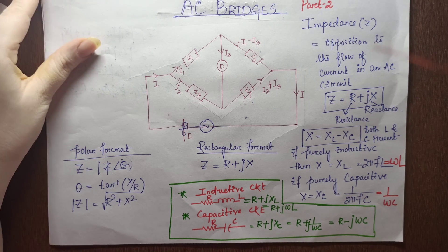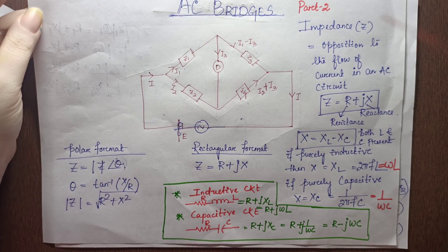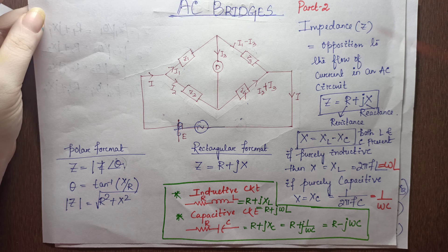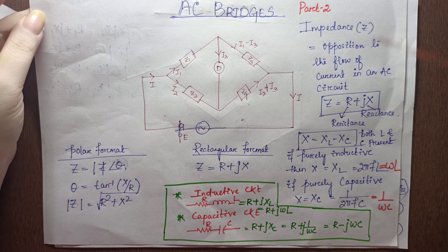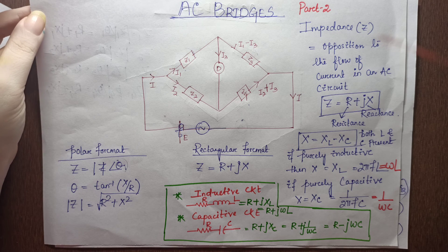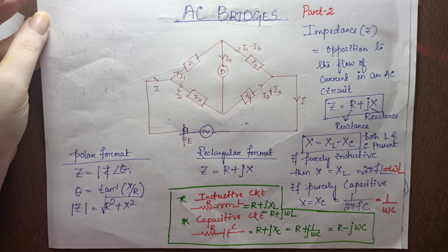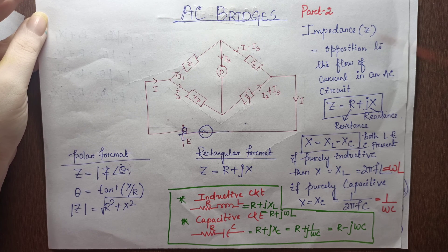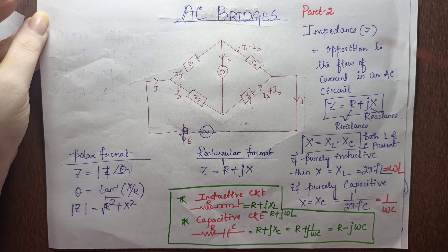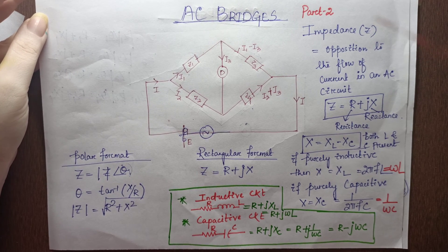Because we are dealing with AC, we have to come across the term impedance, which is opposition to the flow of current in an AC circuit. Like in DC, you only have resistance.